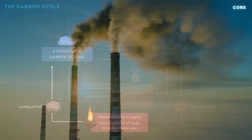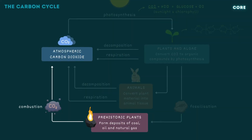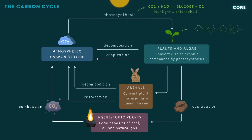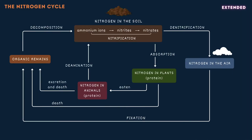Finally, carbon locked up in fossil fuels is returned to the environment through combustion. When fuels are burned in power plants or vehicles, the carbon they contain is oxidized or combined with oxygen to form carbon dioxide. Collectively these processes result in the continuous cycling of carbon, which is essential for maintaining the balance of carbon dioxide in the atmosphere and sustaining life on earth. That's everything you need to know for core, so we'll move on now to the extended section.